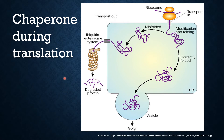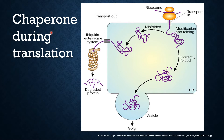Let's understand one by one what the options given in our question are. The first option is chaperone, which are the proteins that help in protein folding. Remember that chaperones assist the conformational folding or unfolding of the protein. Chaperones are also involved in assembly and disassembly of other macromolecular structures. These are primarily concerned with protein folding — so chaperones are involved in protein folding.